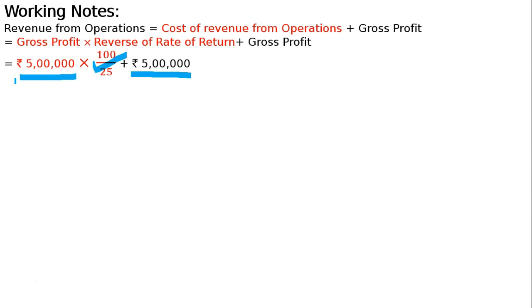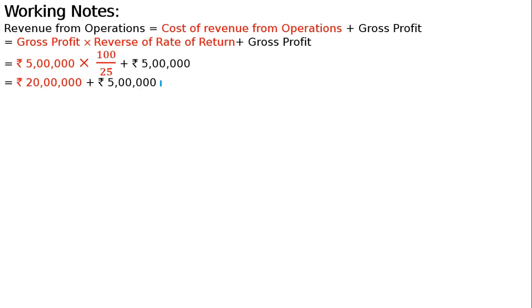Cost of Goods Sold is 20 lakh, plus Gross Profit of 5 lakh, which equals 25 lakh. So Revenue from Operations is 25 lakh.